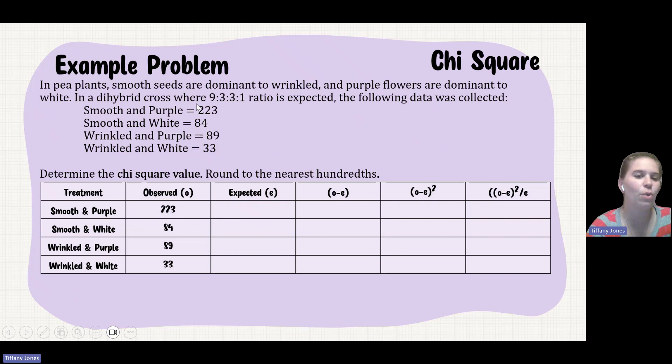So because of the fact that I know that it is a 9 to 3 to 3 to 1 ratio, I'm going to say 9 sixteenths of them are going to be smooth and purple. So the total number I have is 429. If I take 223 plus 84 plus 89 plus 33, that gives me 429. I take that value and I multiply by 9 over 16, which gives me 241.313.